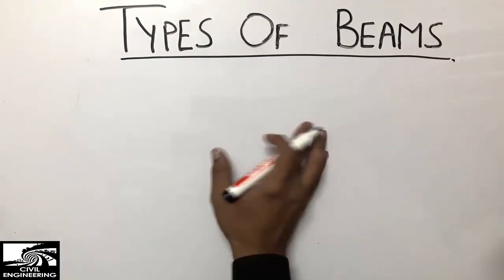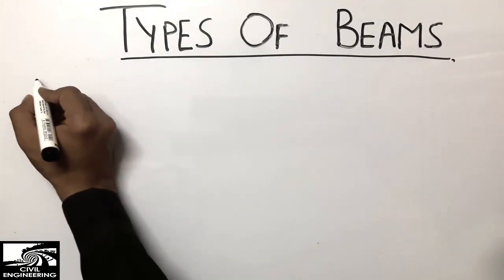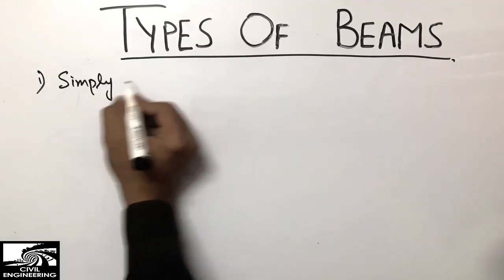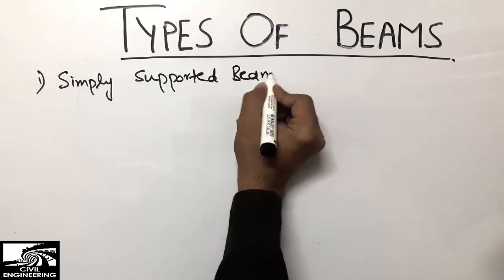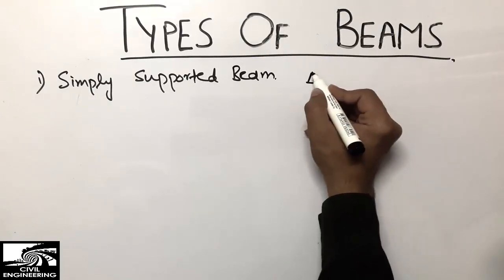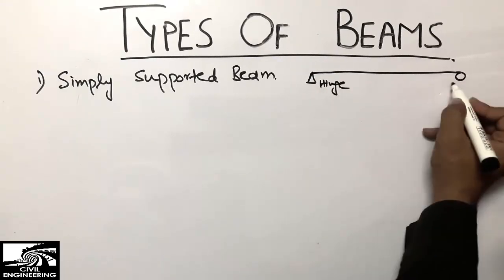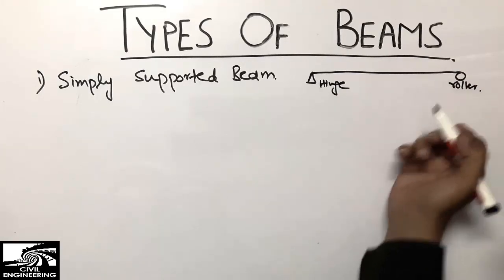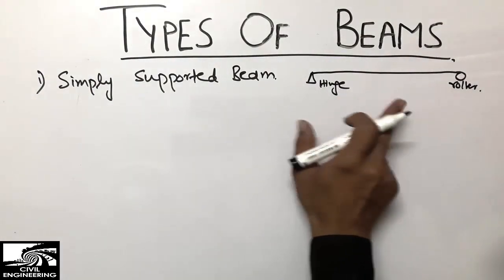One by one I will discuss diagrammatically and with explanation. The first type of beam we are mostly coming across is the simply supported beam. It is the type of beam which is supported only at two supports — one is a hinge support and one is a roller support — and this beam we call the simply supported beam.